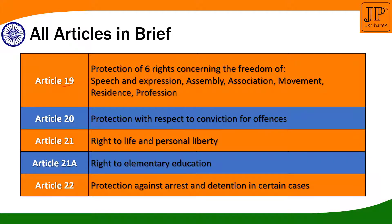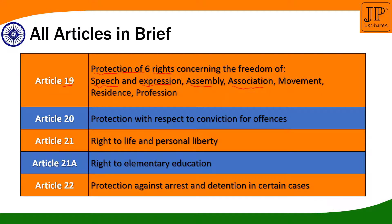Article 19 states that there is protection of a total of 6 fundamental rights of freedom. The first is the right to speech and expression. Second, right to assembly. Third, right to association. Fourth, right to movement. Fifth, right to residence. And last is the right to have a profession. These are all the rights that come under Article 19.